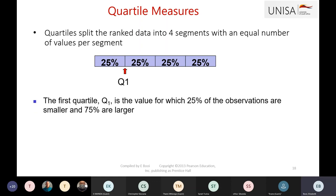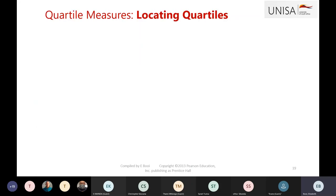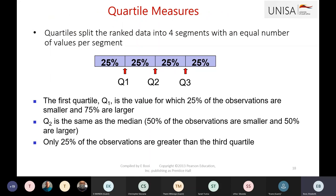We divide the data into four segments. Quartile 1 accounts for 25% of the data, with more than 75% of values larger than that value. Quartile 2 is the same as your median, with 50% of values below it. The third quartile accounts for the upper 25% of values, with 75% of values smaller than that quartile.